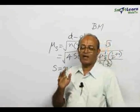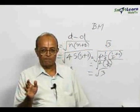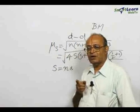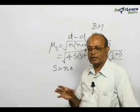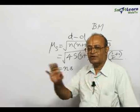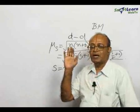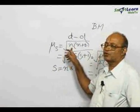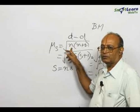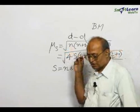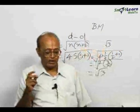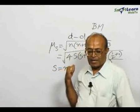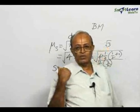For diamagnetic substances, diamagnetism means all the electrons are paired — there is not even a single unpaired electron. That means for a diamagnetic compound we assume n equals 0. These spin-only magnetic moment expressions are applicable only to paramagnetic compounds.